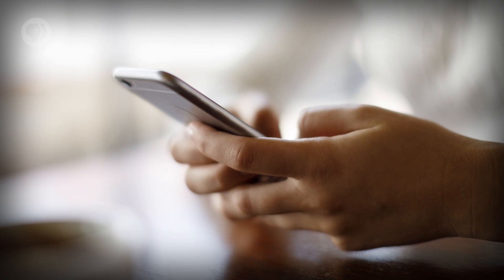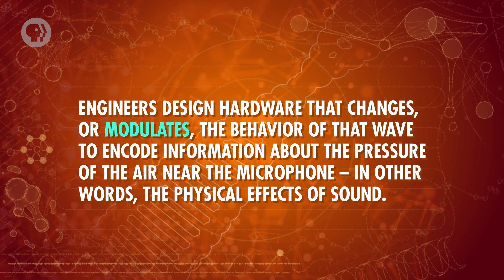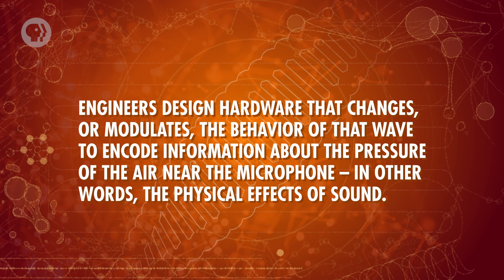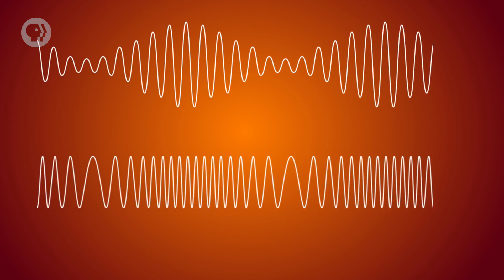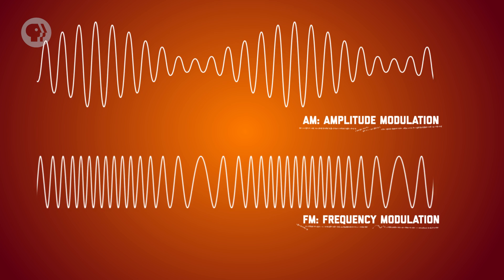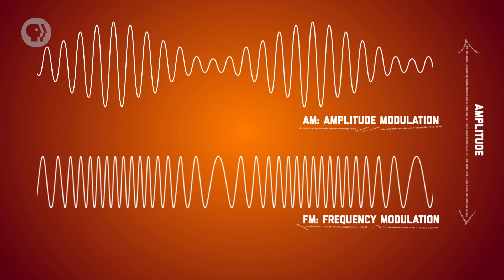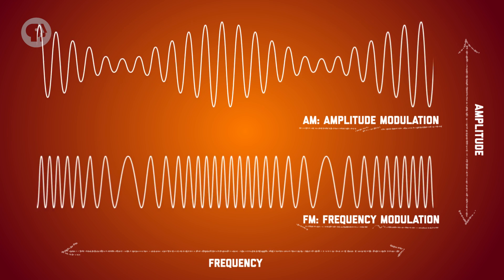Consider radio waves, like the kind used to transmit signals between your phone and a cell tower. It's the wave nature of radio that lets your phone encode the information you need to make a call. Engineers design hardware that changes or modulates the behavior of that wave to encode information about the pressure of the air near the microphone – in other words, the physical effects of sound. Two of the most common ways of doing this are amplitude modulation and frequency modulation, or AM and FM. That's where the names on your radio dial come from. One adjusts the amplitude or strength of the wave, while the other changes the frequency or distance between one peak and the next. Much like telegraph signals, the transmitted wave carries the information you want, which is then decoded on the other side. Similar methods can even represent sounds and images, which is how television broadcasts work.